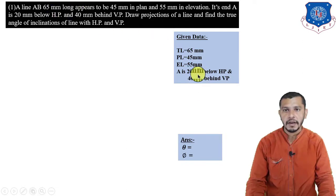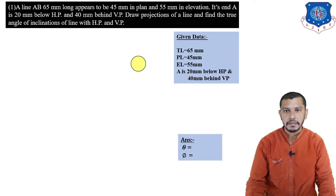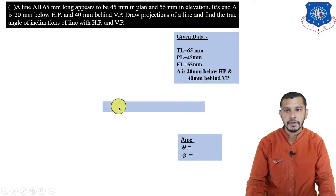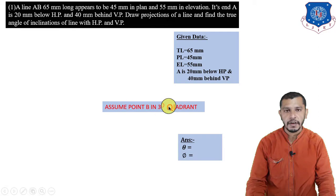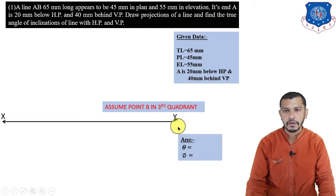The quadrant of point B or locus of point B is not given, so first we have to assume the quadrant of point B. Since point A is in the third quadrant, we will assume point B in the third quadrant also. Start the problem by drawing the XY reference line.